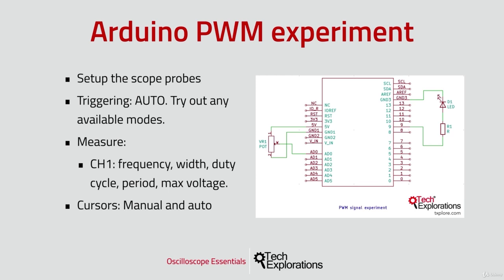My oscilloscope offers four automatic trigger modes which allow us to focus on specific features of the waveform, like its width and up or down slopes. Once the auto mode sets up the trigger, we can start taking measurements.